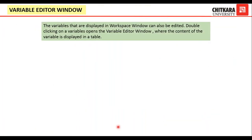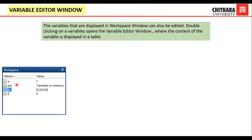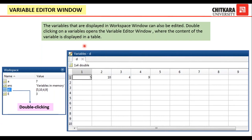Now we move on to the variable editor window. Suppose I want to change some value in variable D, which is a vector. I go to the workspace window, double-click on D, and a dropdown menu with an Excel-like sheet containing the variable will be displayed. I can click on the first element, it will be highlighted, and then I can change its value. This is how we can edit the variable window.